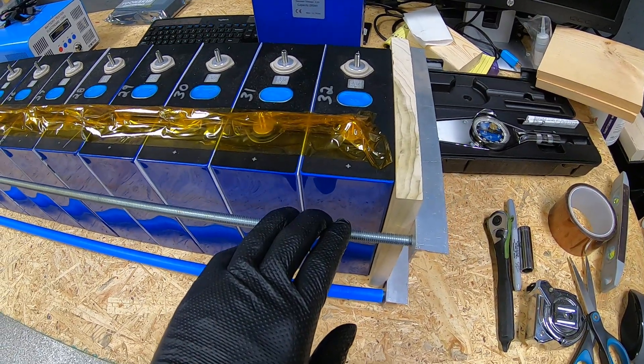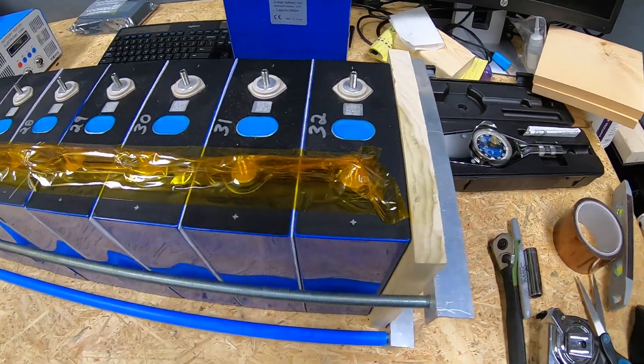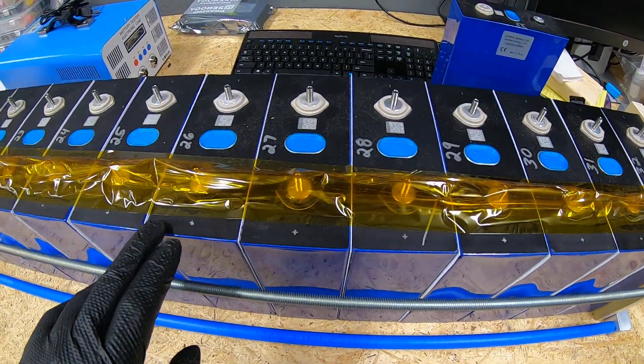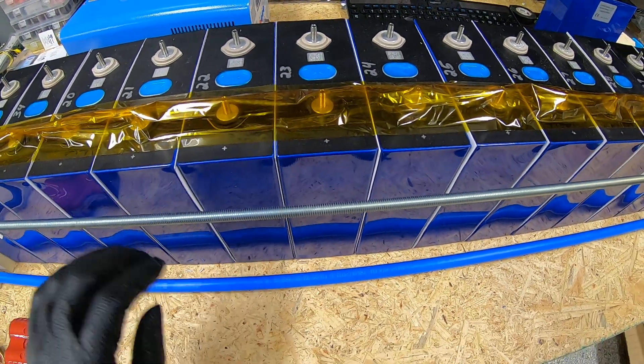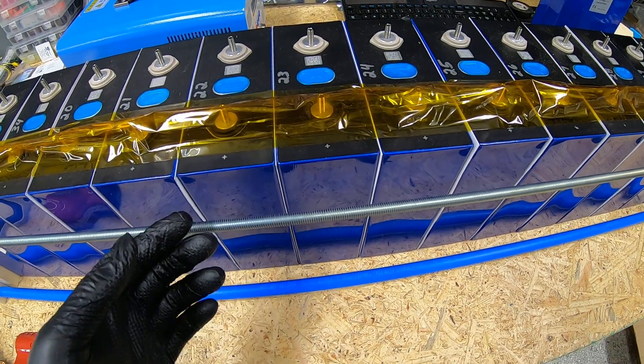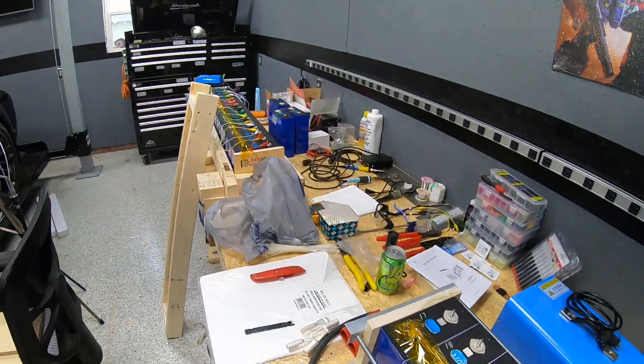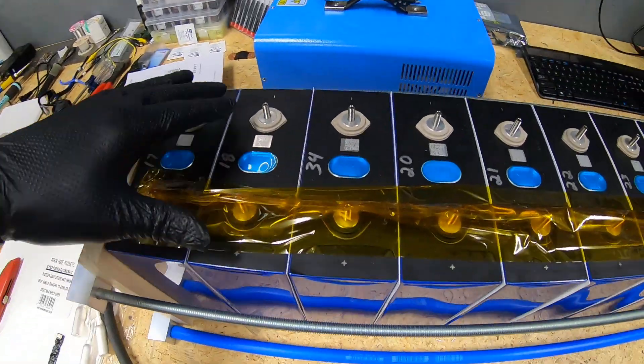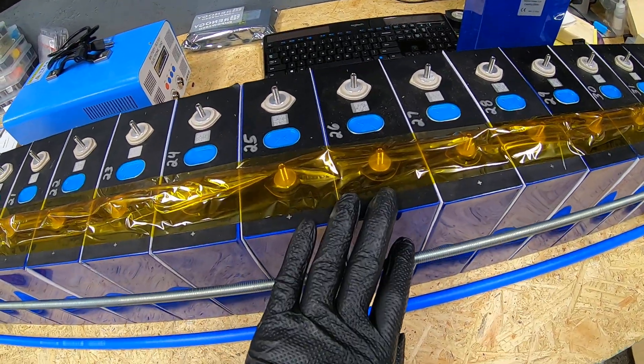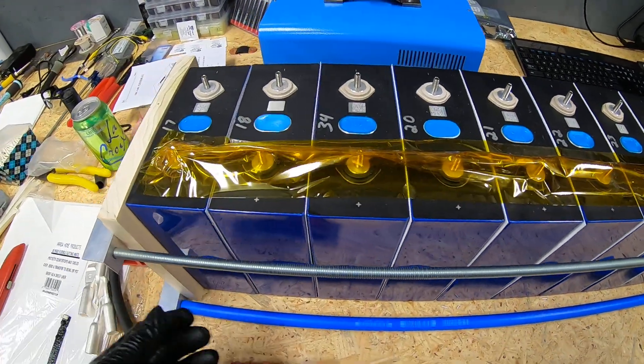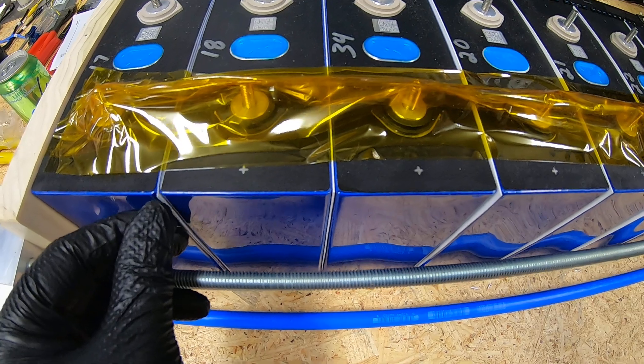You'll notice these cells are all going in the same direction. I put this together temporarily to show you what it will look like and to take measurements. Once this is top balanced, we'll flip these cells end for end to get them in series configuration, just like on the Will Prowse lithium solar setup.